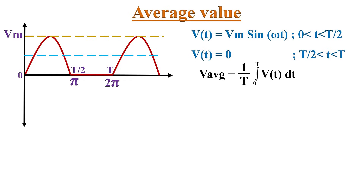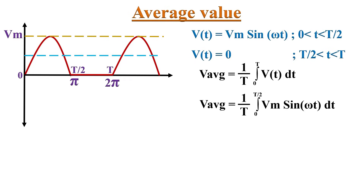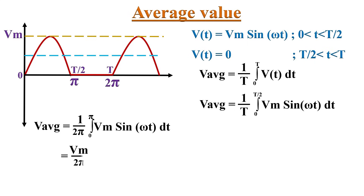So the average value can be given as (1/T) · ∫₀ᵀ Vm·sin(ωt) dt. Inserting the value, we write the average voltage as (1/T) · ∫₀^(T/2) Vm·sin(ωt) dt. Now substituting the base length as π and 2π instead of T/2 and T, we can write this equation as (1/2π) · ∫₀^π Vm·sin(ωt) dt.